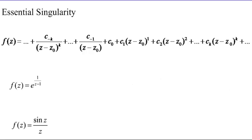The next is what you call essential singularity. Z equals z0 is an essential singularity if the Laurent series developed around this z0 has an infinite principal part.